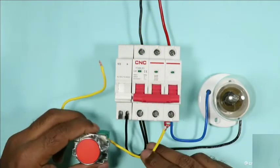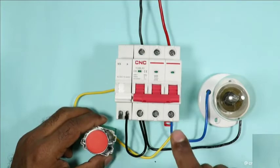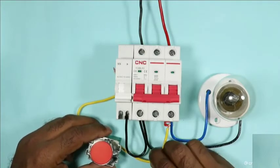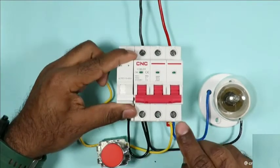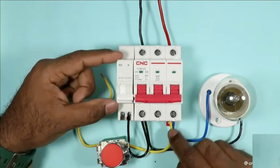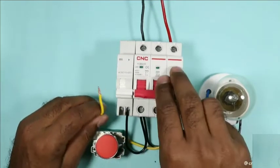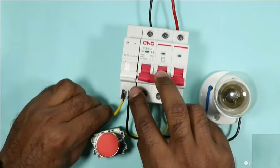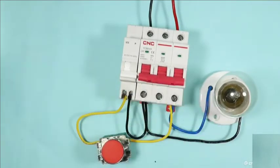Connect one wire of this push button with output terminal of MCB where we get phase supply. In this terminal I receive phase supply, so I connected wire here. This second wire of push button is to be connected with second terminal of shunt coil. This much connection is only required.